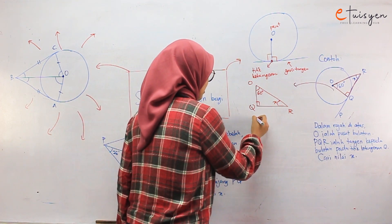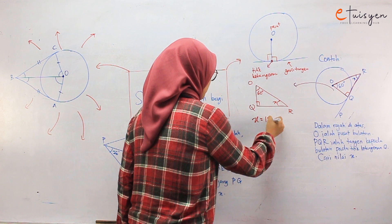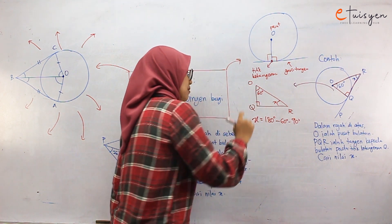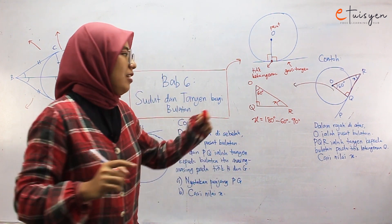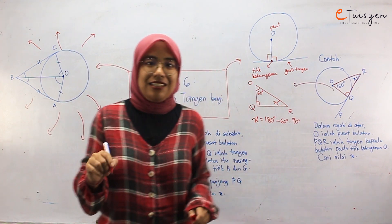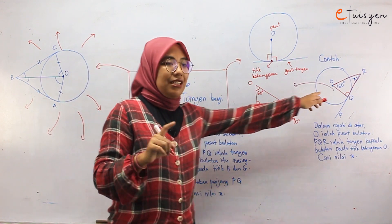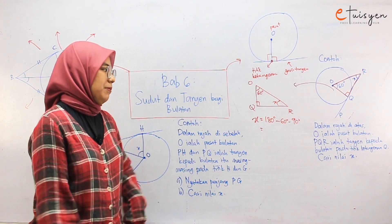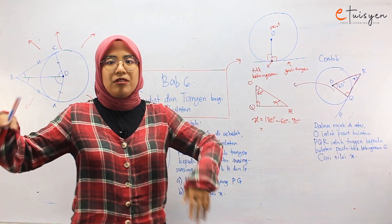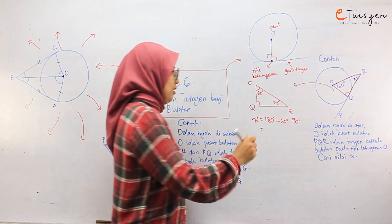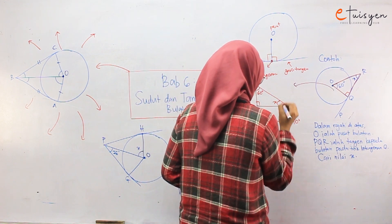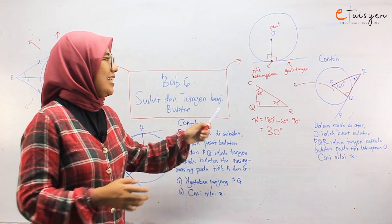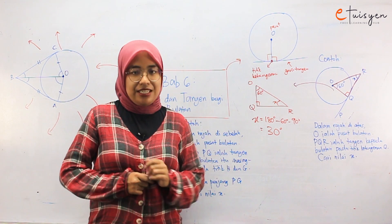Macam ni nak cari X: X sama dengan 180 darjah tolak 60 darjah tolak 90 darjah. So kita tahu yang ni 90 darjah sebab dia dah bagi hint — PQR ialah tangent. So kita tahu dah dia mesti 90 darjah dan mesti kena dekat bulatan. So kita akan dapat 180 tolak 60 dapat 120, 120 tolak 90 dapat 30 darjah. So jawapan akhirnya adalah 30 darjah. So ini adalah salah satu contoh untuk ketangenan.